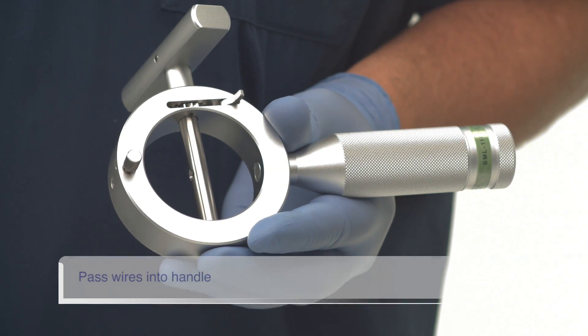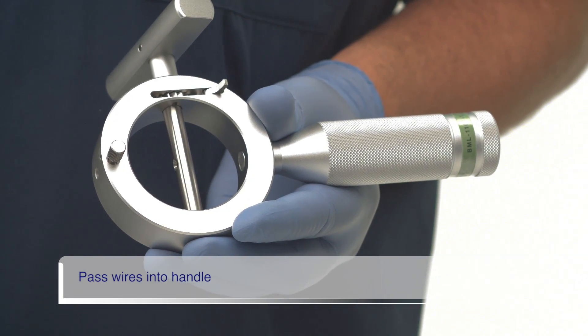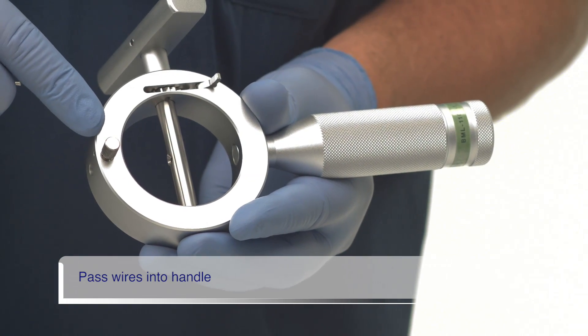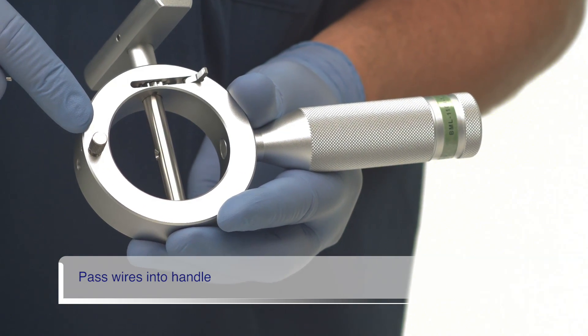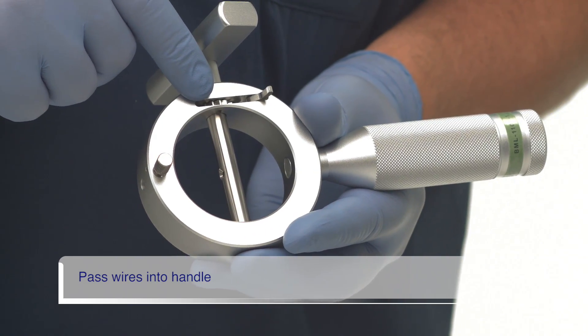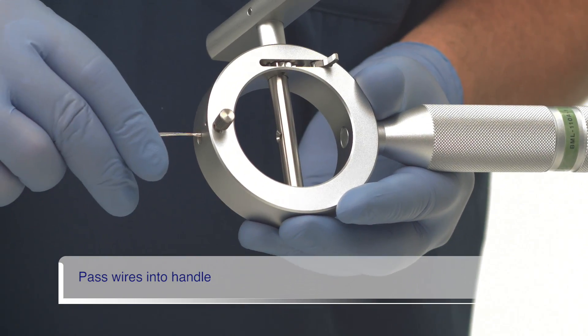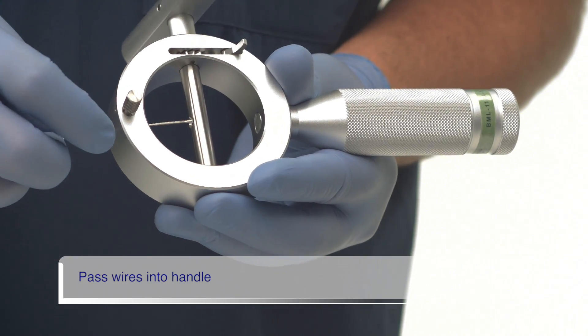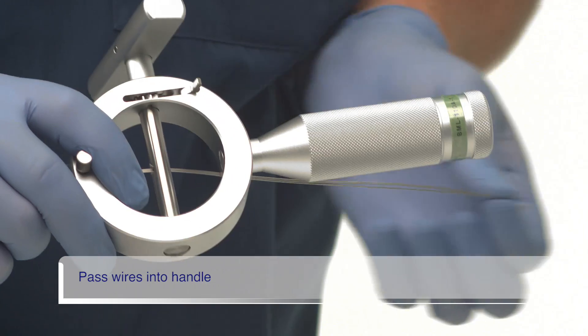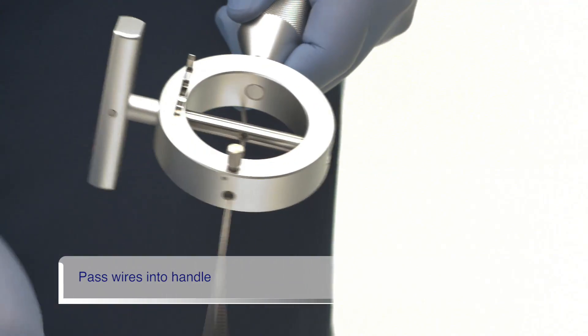We will now load the wires into the emergency lithotriptor handle. Note that the emergency handle has two locks. One is a thumb screw that secures the coil sheath and the second is the ratchet lock which we tested earlier. The wires are passed through the hole at the top of the handle and through the hole at the center of the T-piece.